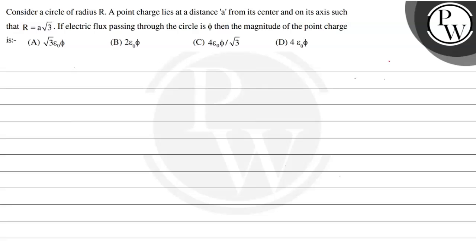Let's read this question. Consider a circle of radius r. A point charge lies at a distance a from its center and on its axis such that r equals a√3. If the electric flux passing through the circle is φ, then the magnitude of the point charge is: √3·ε₀φ, 2ε₀φ, 4ε₀φ/√3, or 4ε₀φ. We have to choose the correct option.